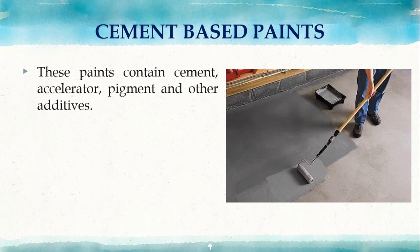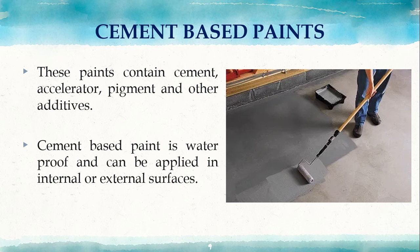Next is cement-based paint. Cement-based paints contain cement as the base material. These paints generally contain cement, accelerator, pigment, and other additives. They are available in powder form — by mixing water and stirring, the required paint consistency is obtained. Cement-based paint is waterproof and can be applied on internal or external surfaces.